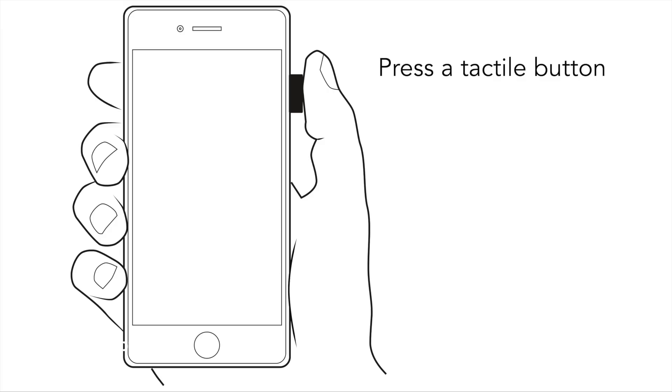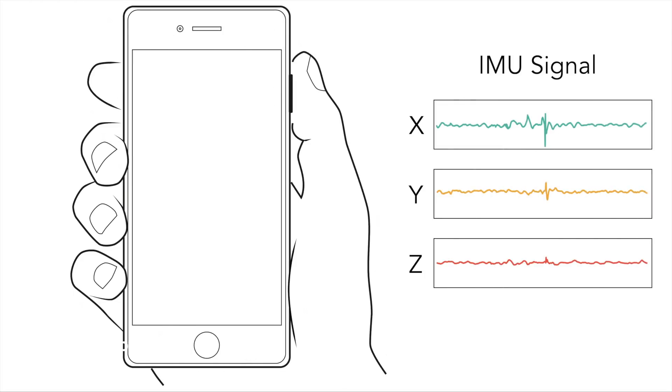The design of VIDGETS is based on a key observation that when the user presses a tactile button, the finger force will cause a small shift of the device. Although this shift is subtle and transient, it can be detected by the accelerometer, also known as the inertial measurement unit, equipped on the mobile device.